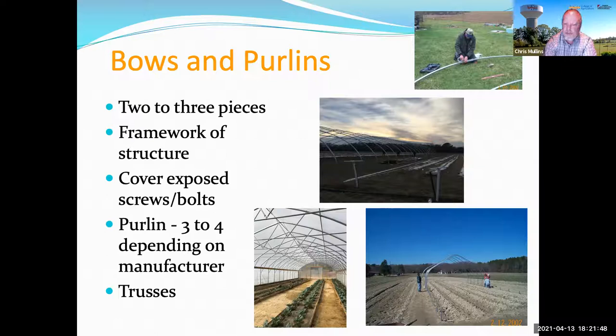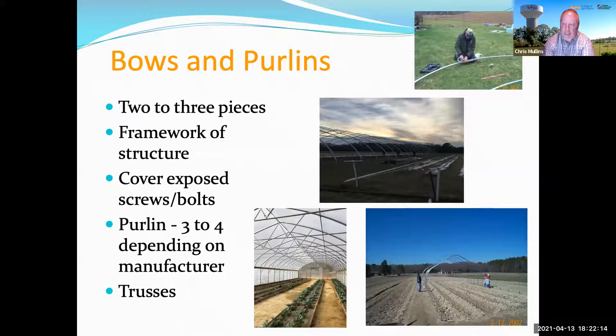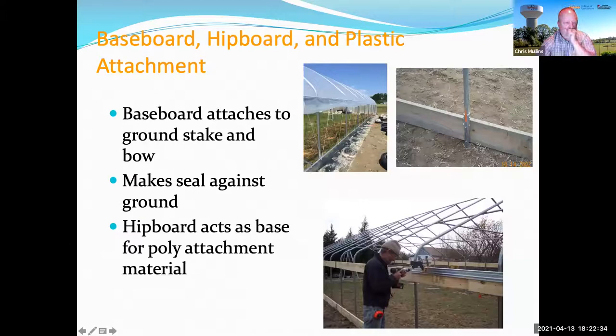You can also have trusses — that's a more expensive arrangement but results in a much stronger structure. These structures can come with architect-engineered stamped plans showing that when properly assembled they have a rated snow load and wind resistance. If you need those stamped plans you can usually get them from the manufacturer.